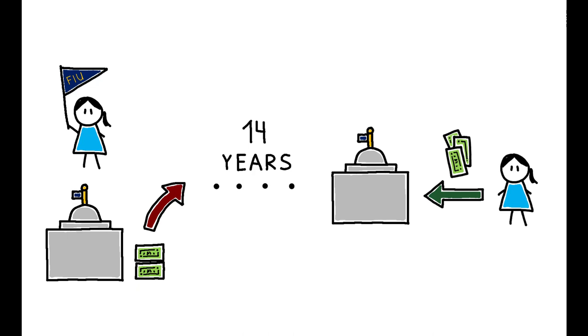In other words, by the time she turns 33, the marginal admit has repaid the upfront cost of sending her to FIU in the form of higher tax revenues.